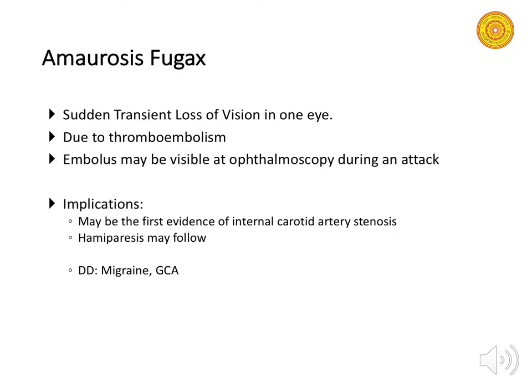Amaurosis fugax is a sudden transient loss of vision in one eye. It is actually a form of transient ischemic attack caused by thromboembolism affecting one eye. Emboli may even be seen on ophthalmoscopy where blood flow is obstructed. It can be initial evidence of internal carotid artery stenosis, which can lead to stroke or hemiparesis. Refer to a neurologist rather than an ophthalmologist, as this is a neurological problem.